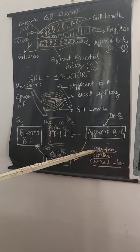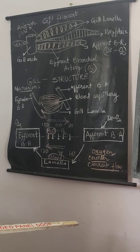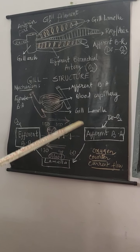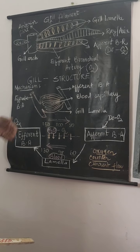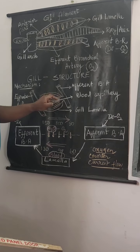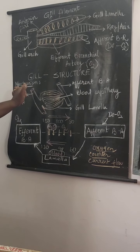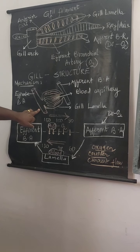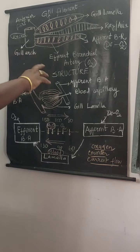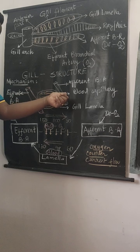We are going to understand the process of oxygen counter-current flow, which takes place in the structure called the gill lamella. In the previous class we understood that the gill plate consists of the afferent branchial artery attached towards one side and the efferent branchial artery towards the other side. When they make their entry into the gill lamella, they show minute branches which form the blood capillaries.